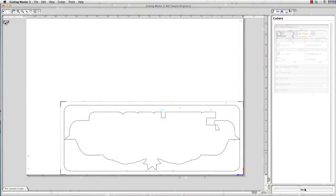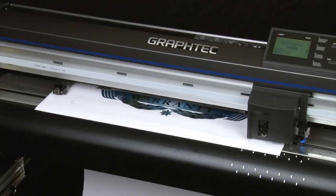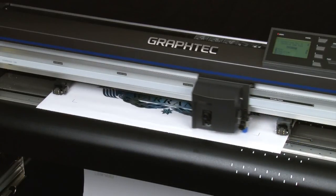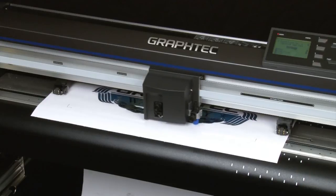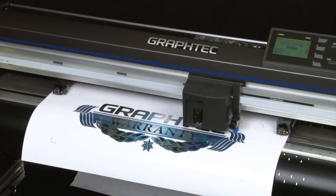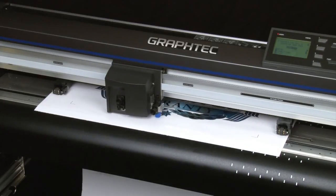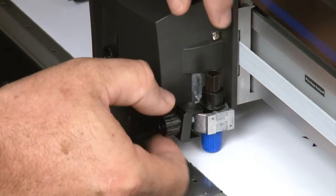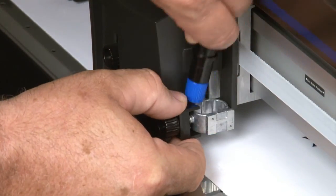And send the job. The cutter will start to find the registration marks and cut the kiss cut layer. Once it is finished cutting the kiss cut layer it will then stop. We can now move the blade holder, which is tool 1, from the back slot and place it in the front slot or tool position 3.